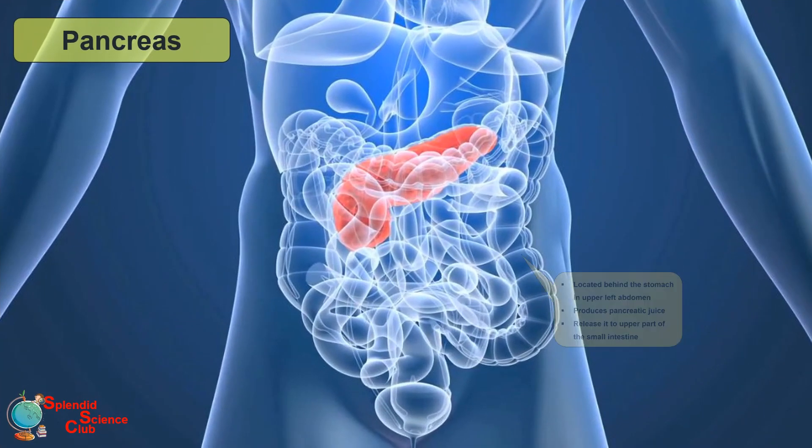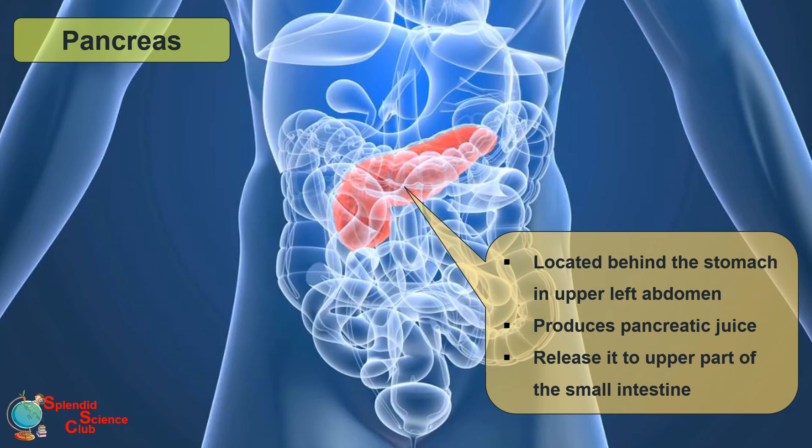The pancreas is located behind the stomach in the upper left abdomen. It produces pancreatic juices and releases them into the small intestine.